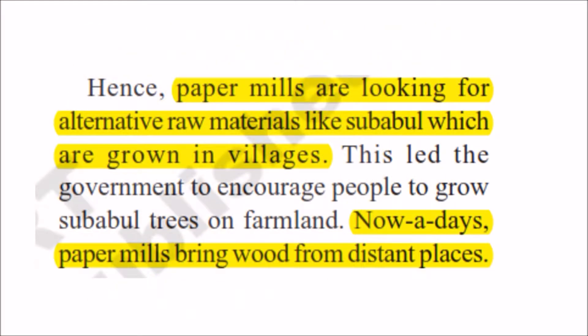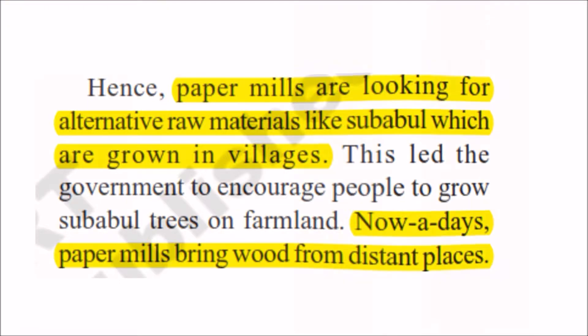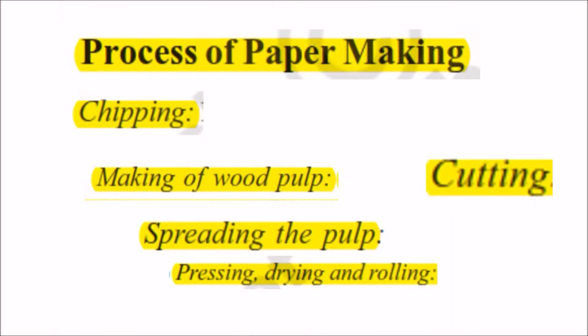What is the process of paper making? The paper making process consists of five stages: chipping, making of wood pulp, spreading of the pulp, pressing and drying, rolling, and finally cutting. Let us see each stage in detail.